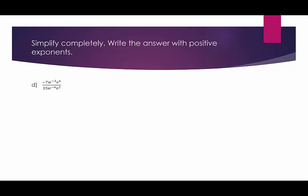In our last example, we don't have any distribution. We have a few negative exponents, so we'll switch those around. Negative 7 does not have a negative exponent, so it stays where it is. The w to the 4th will move up. v to the 6th stays where it is. 35 stays where it is. The w cubed would move down, and the v squared moves down. Now simplifying the numbers: negative 7 over 35 — these are normal numbers, so we just find common factors. They have a common factor of 7, so we divide out the 7. That leaves a negative in the numerator and a factor of 5 in the denominator.